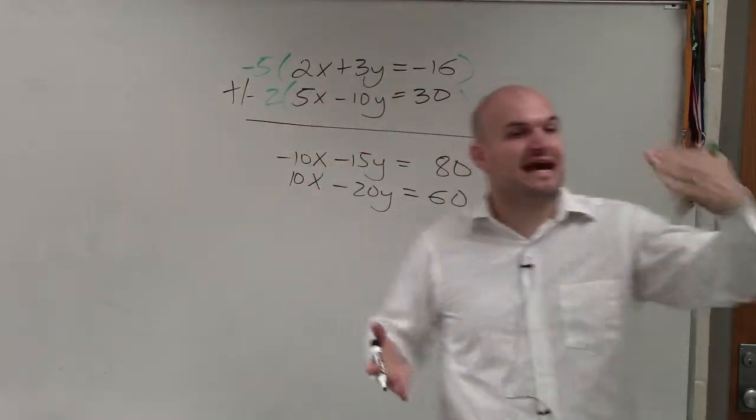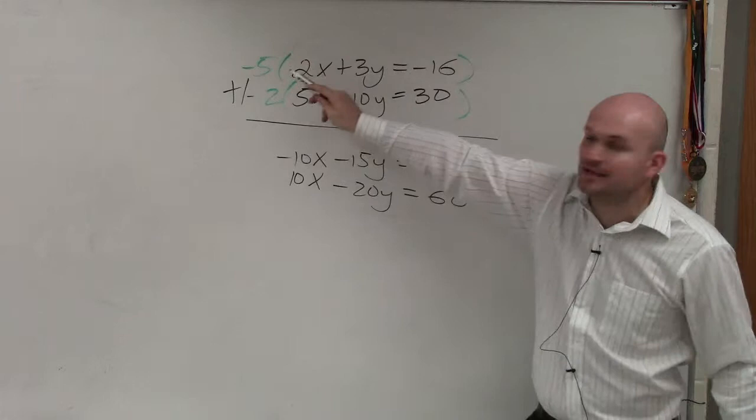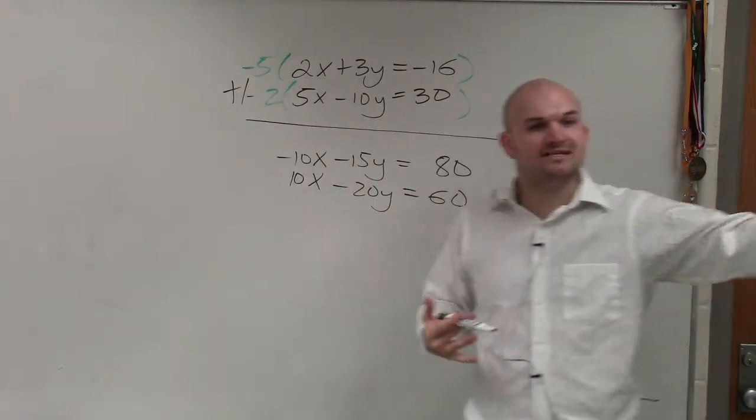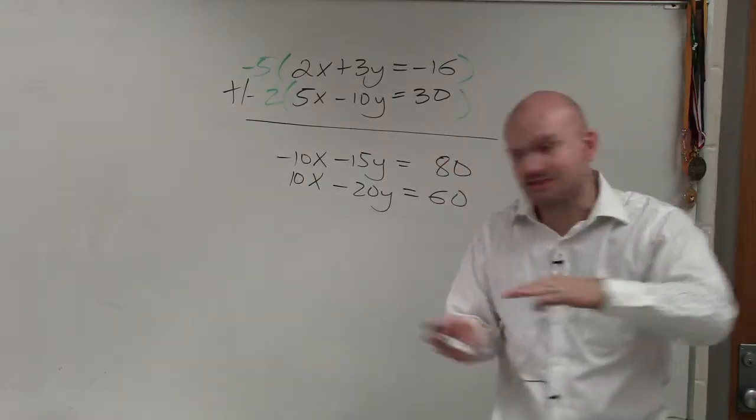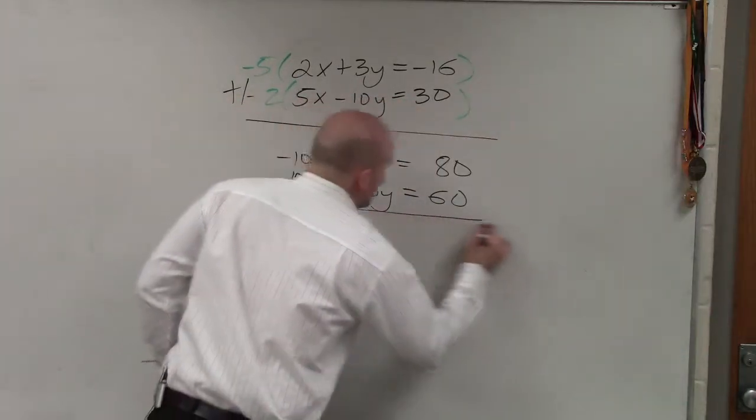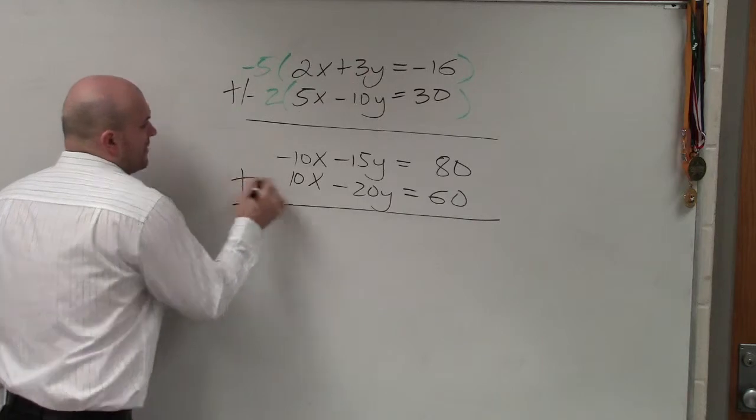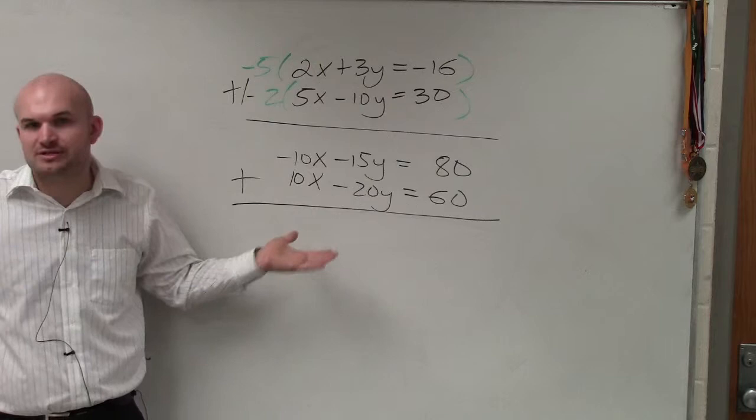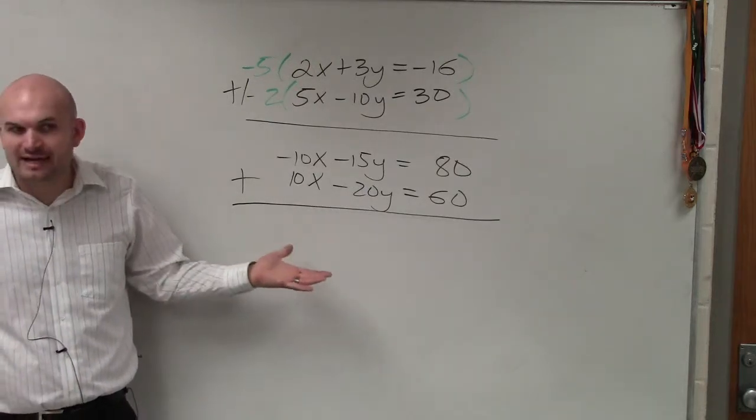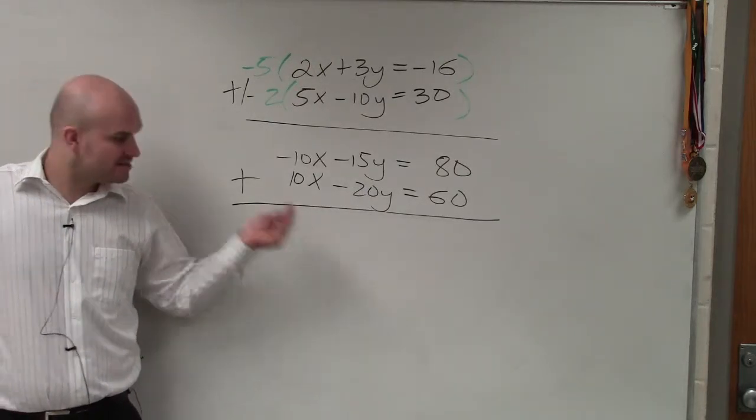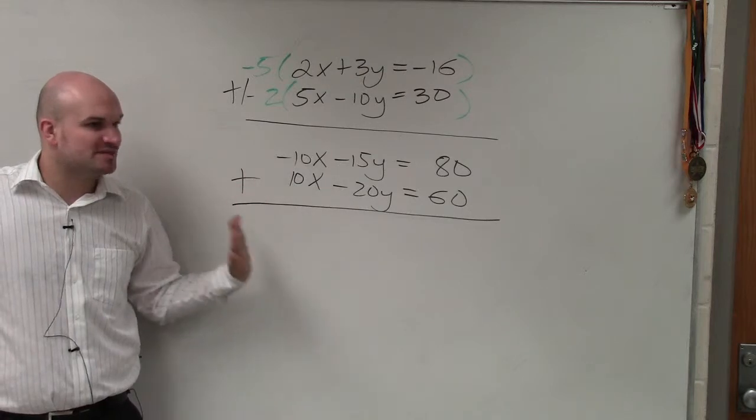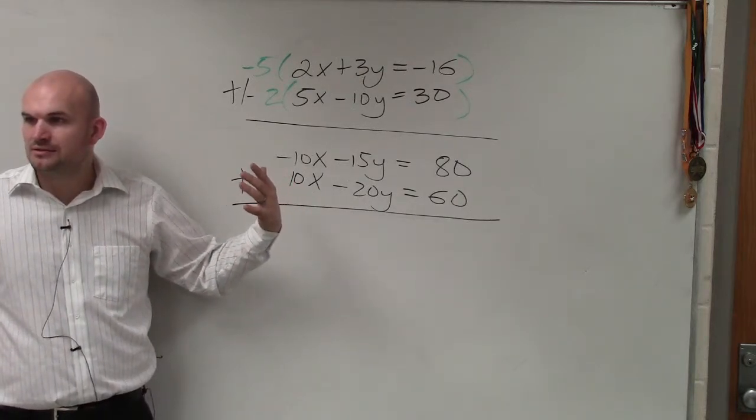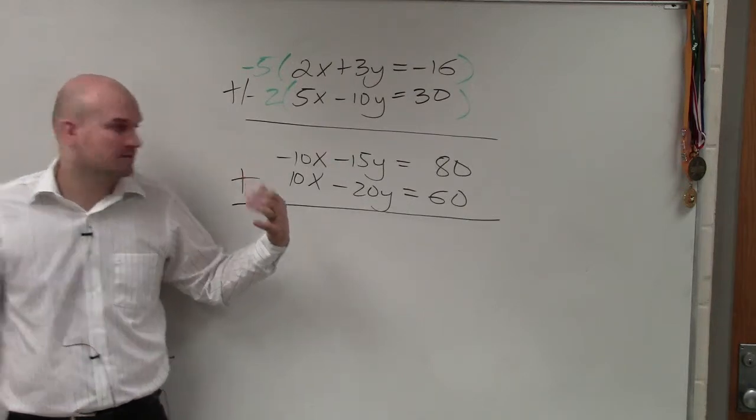The reason why I decided to make it negative is because, look it, now I have a negative 10x and a positive 10x. So when I have two equations where one's negative, one's positive, I can add the two equations. If you decided to not make it negative, then rather than adding the two equations, you would be subtracting the two equations, which is perfectly fine. I just know from experience, the majority of students make their mistakes when they are subtracting.